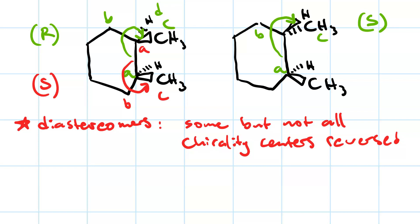And the bottom chirality center, A, B, C. Counter-clockwise with the lowest priority group on a dash is S.